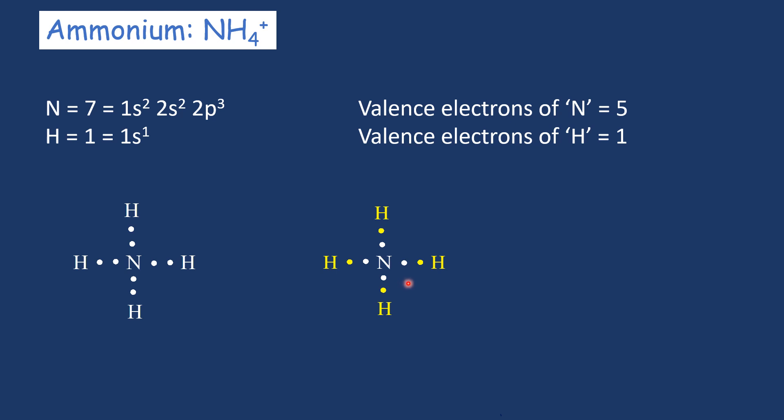In this colored Lewis dot structure, if we count the number of electrons around nitrogen, we find it is 4 — less than 5 by 1. So nitrogen carries a +1 formal charge. Around hydrogen, we have 1 electron, which equals its valence electron in the atomic state, so there is no formal charge on hydrogen. Using a bond representation, we can write this with a positive charge on nitrogen.